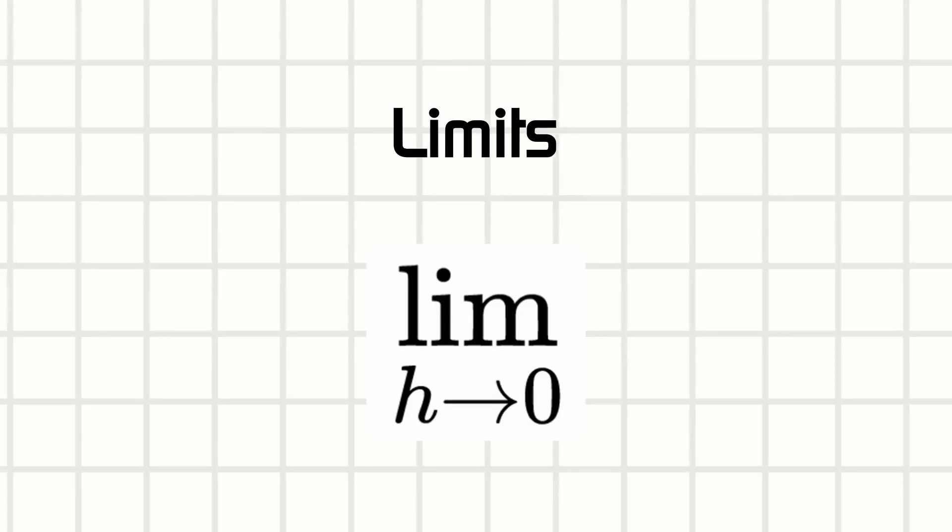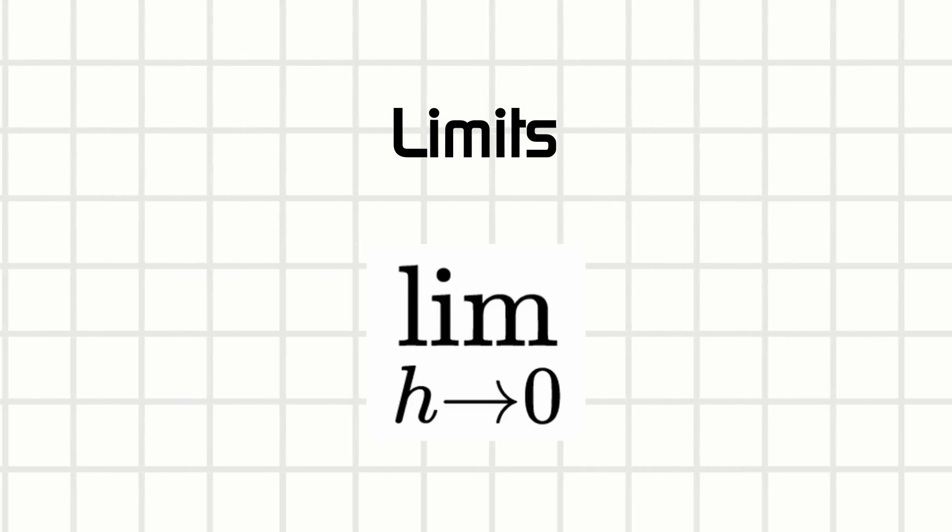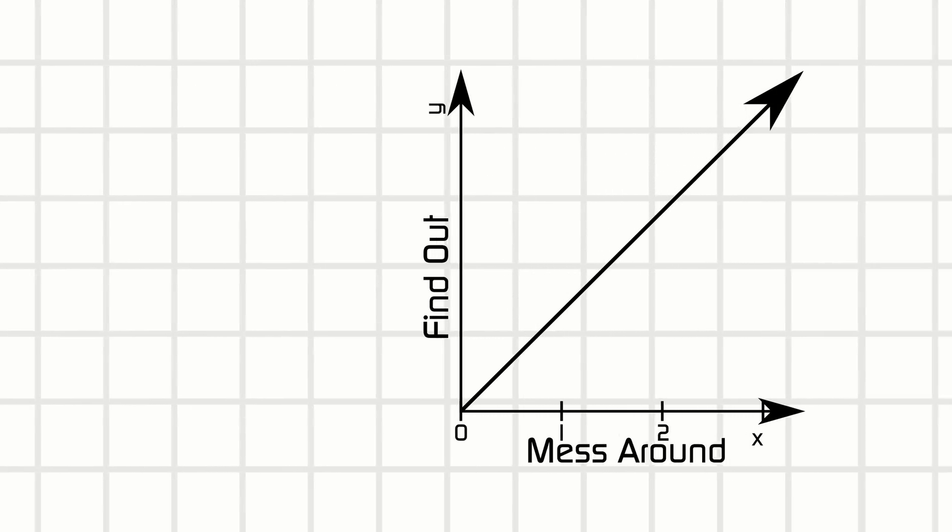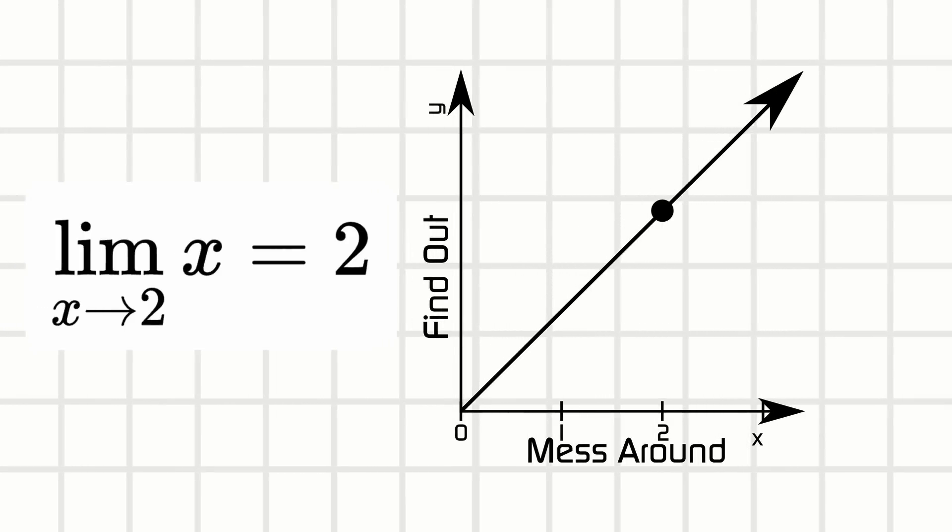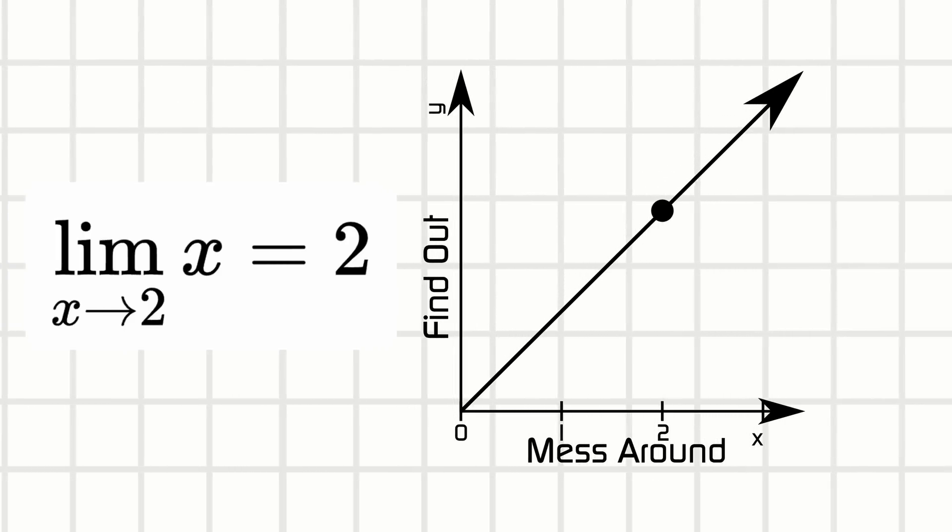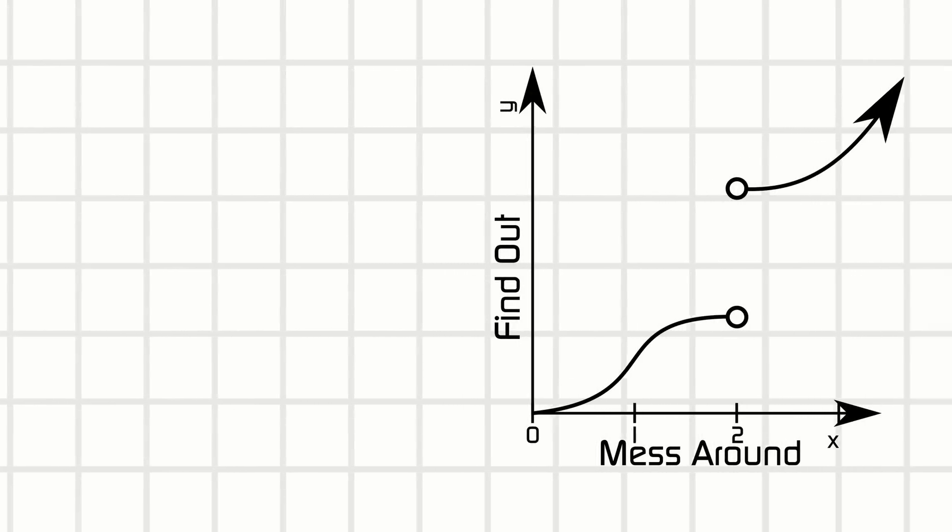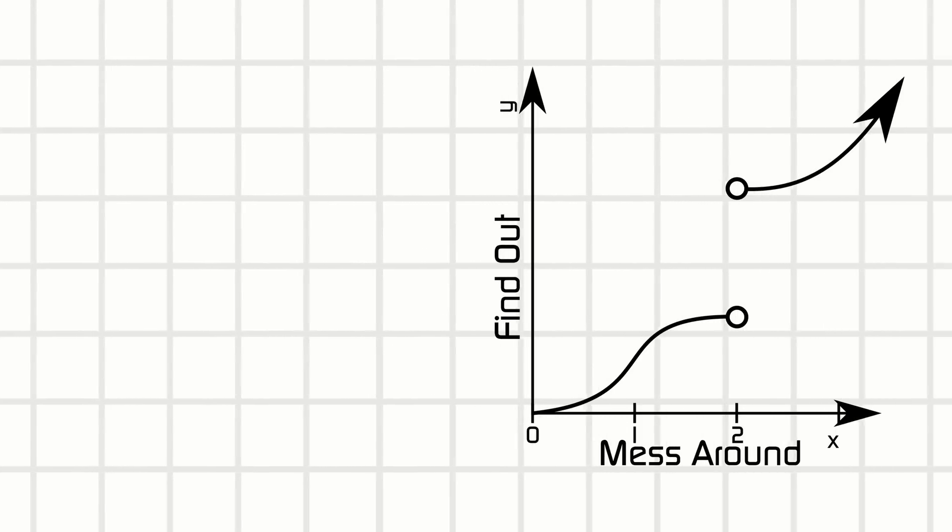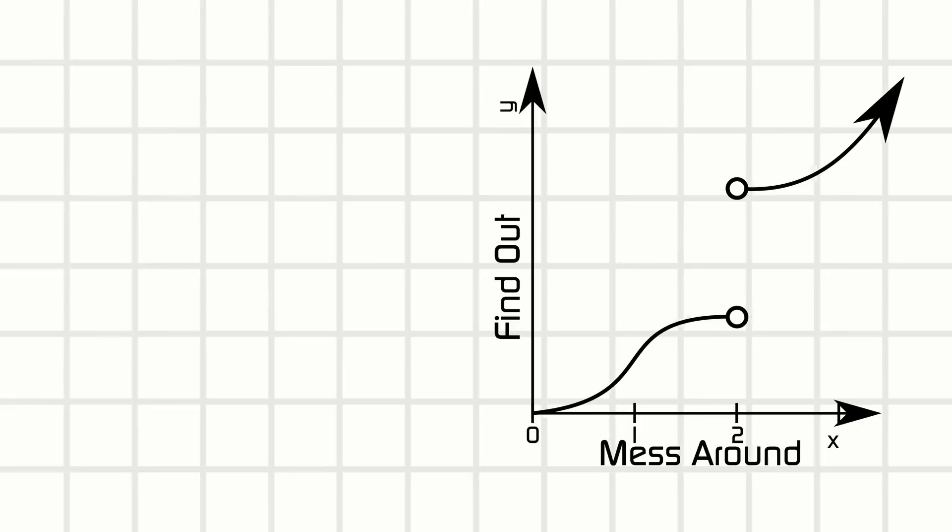In calculus class, you first learn about limits, which is all about what the function gives you when you approach a certain input. You mess around a lot, you find out a lot. Initially this sounds dumb, just plug in the value into the function. Okay, but some functions like to lie. Say the function looks like this, and you want to mess around for two units. Now you can't just plug in two into the mess axis, right?